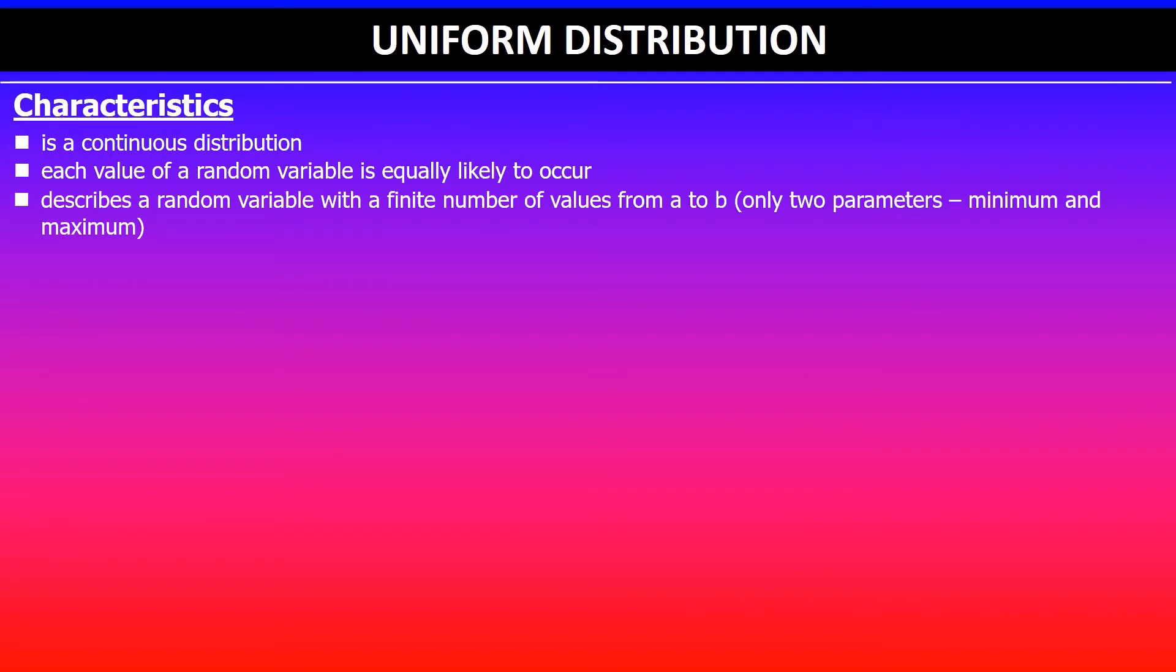These are the two parameters, which are minimum and maximum, and the graph of a uniform distribution is a rectangle as shown below.